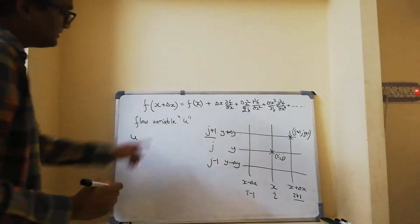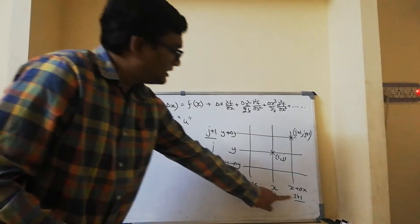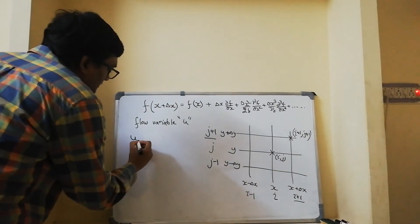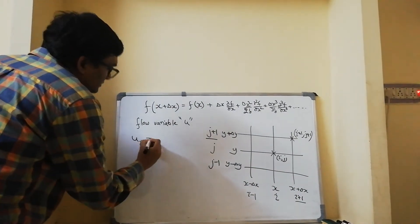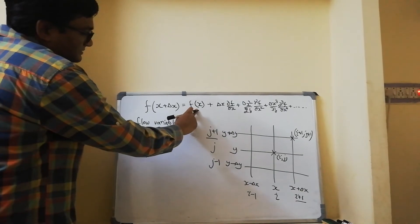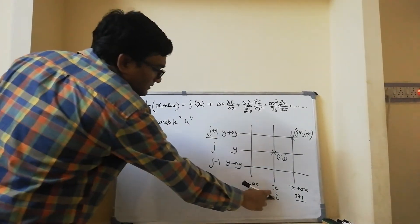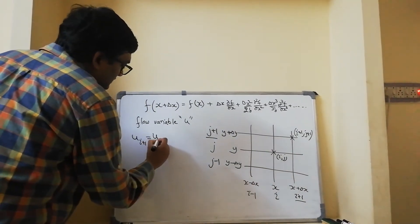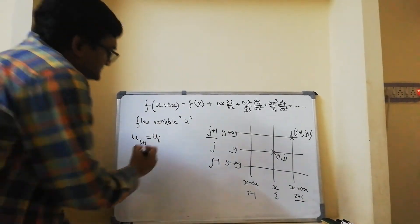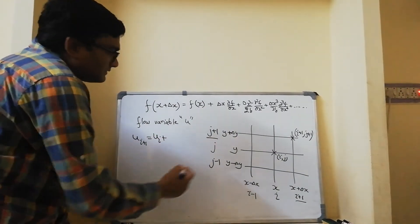U of, what is x plus delta x, i plus 1. U of i plus 1 is equal to, what is fx, that is location of u at i, I can write it as u at location i, plus I have delta x times dou f by dou x.